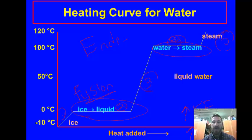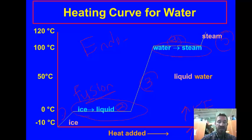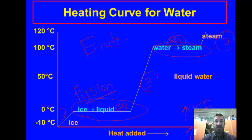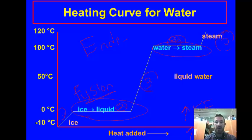Those are the main points from this curve. You can see where water freezes and melts is 0 degrees Celsius, and where it boils, condenses, and changes to steam is 100 degrees Celsius. I think you probably knew those already.